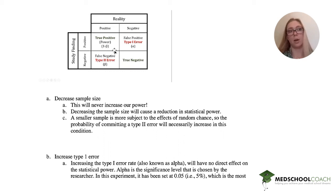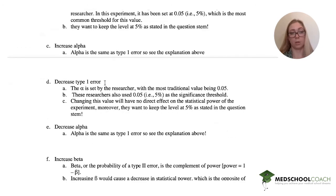1 minus 0.5 versus 1 minus 0.6 gives you 0.5 versus 0.4. So if we increase beta, if we increase our false negatives, we're decreasing power. So we don't want to increase beta.